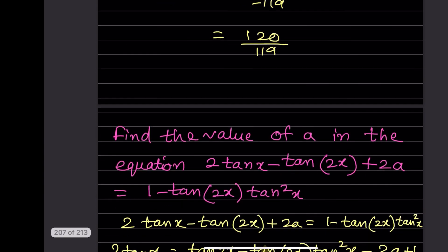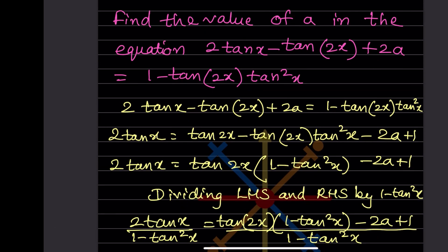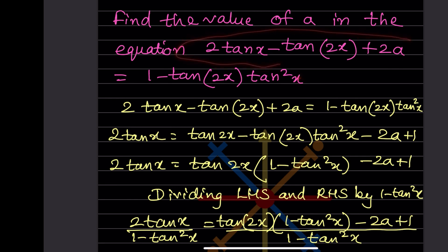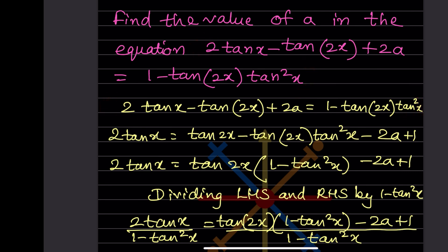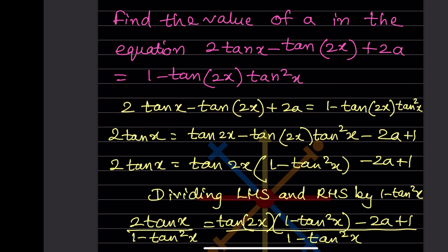Final problem: find the value of 'a' in the equation 2tanx - tan2x + 2a = 1 - tan2x·tan²x. We rearrange, moving tan2x terms to one side.